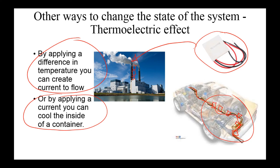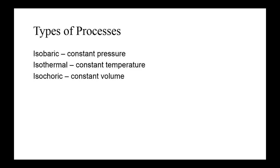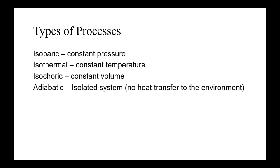Getting back to the idea of changing states with thermodynamic systems, let's identify the four main processes and what work is done and what variables change in each. The four processes are: isobaric (constant pressure), isothermal (constant temperature) — we've looked at examples for both of these — isochoric (constant volume), and adiabatic (an isolated system). An example of an approximately adiabatic process is coffee in a styrofoam cup, where very little heat is transferred to your hand. We probably won't look too much at the adiabatic process in this chapter.